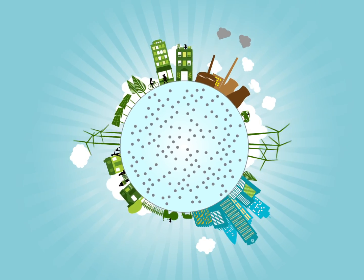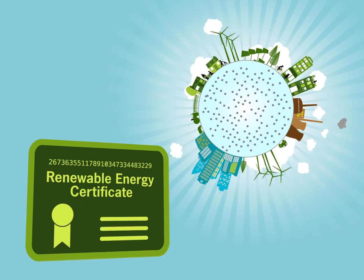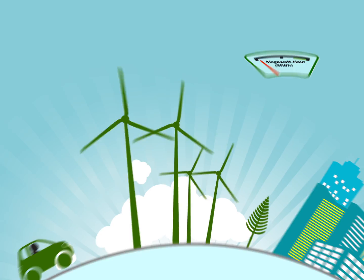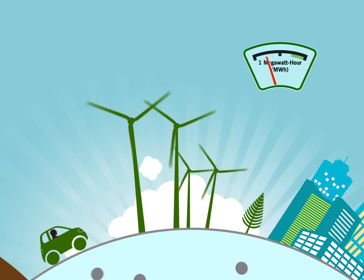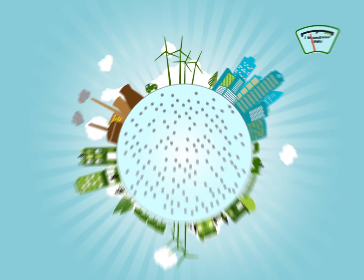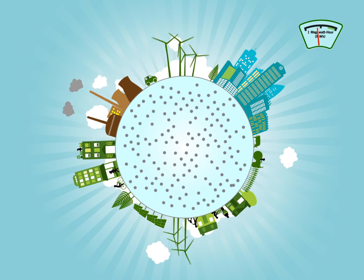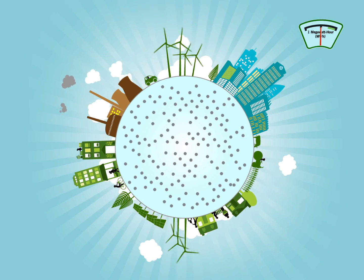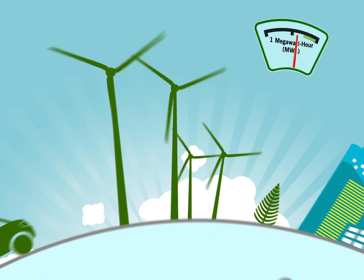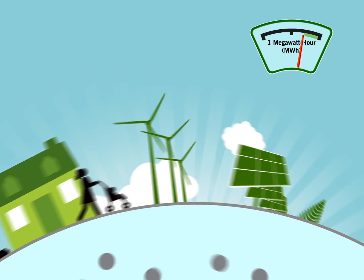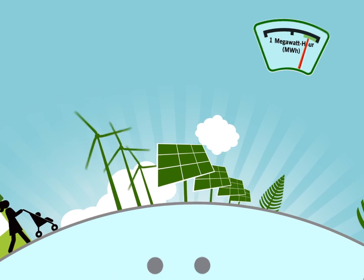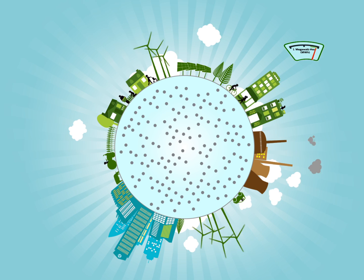If you want to green your power though, you can do that with renewable energy certificates. These certificates are created each time one megawatt hour of renewable energy is generated and put on the grid—about what an average home uses in a month. The wind turbine spins, the solar panel collects sunlight, and when enough electricity is generated, a certificate is created.